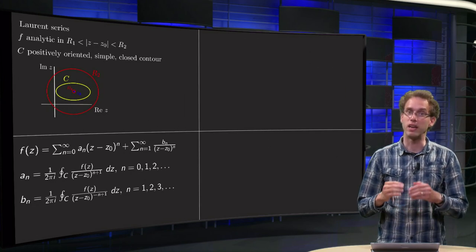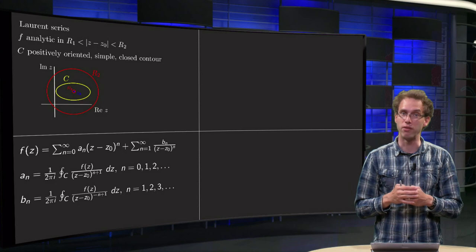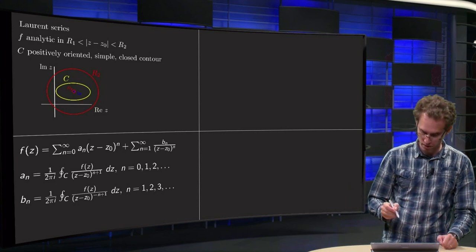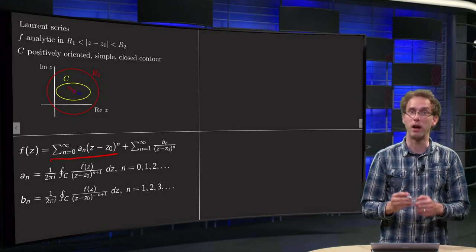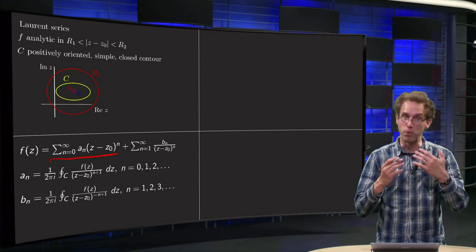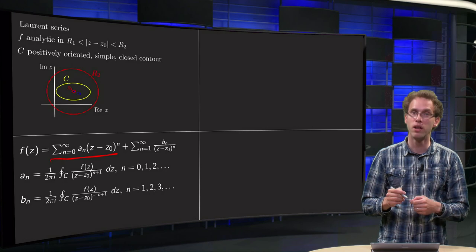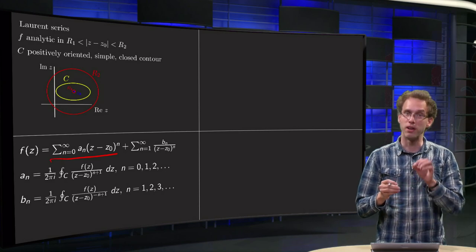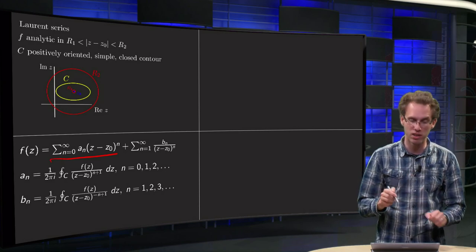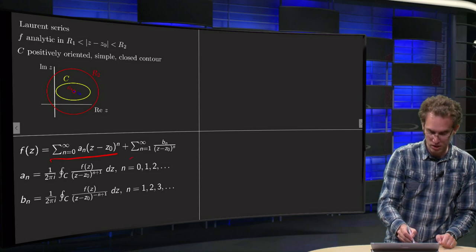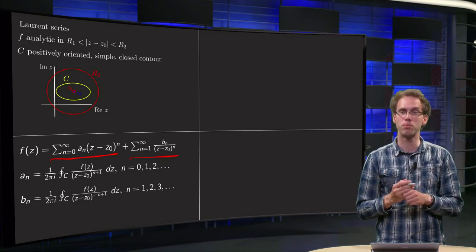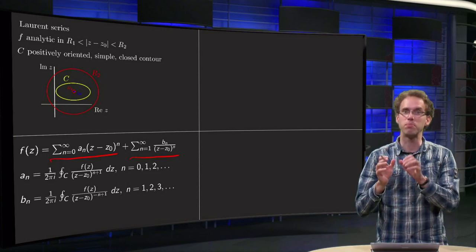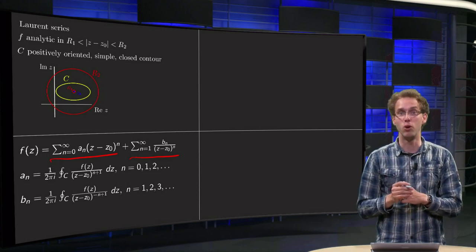Then we can expand our function f of z. We have some part which is similar to what we had for our analytic function with positive powers in z minus z0. But now, because we have this singularity inside, so we have an annulus, that means that we also need a part with negative powers, bn divided by z minus z0 to the power n. This second part is called the principal part of the Laurent series.